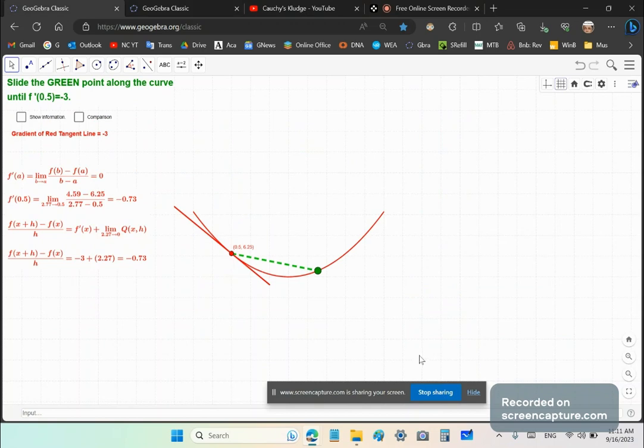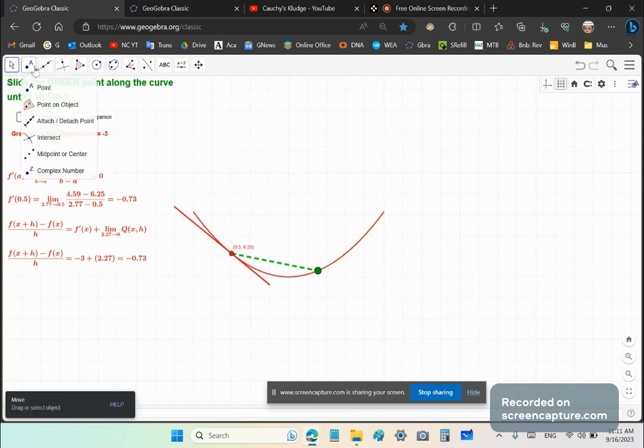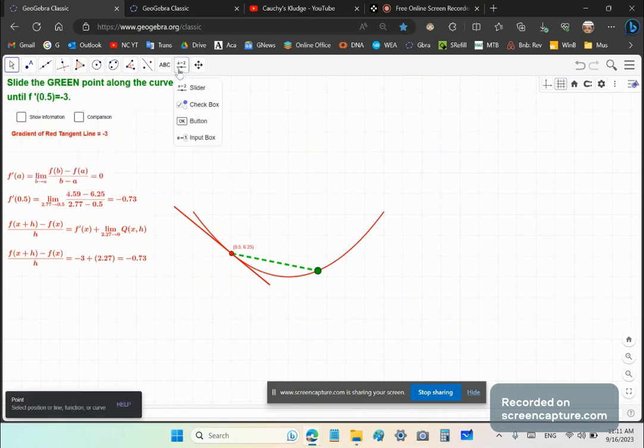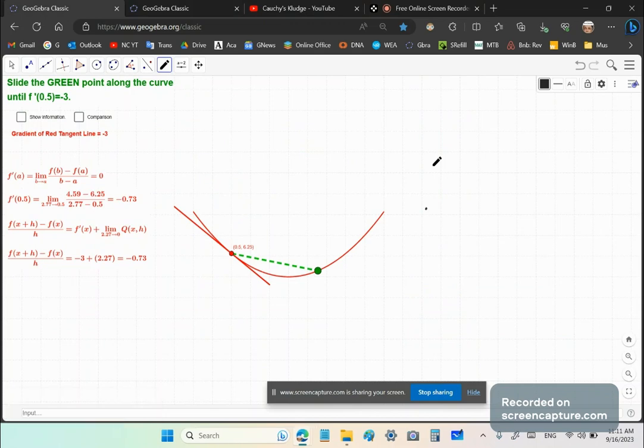But now what would happen if for example you had a function like this? Let's get a pen. Let's say you had a function that went like that, and then like that, and then just over here was the point, and then went all the way like that. So now over here it's not even smooth, and it might not even be defined here or here or here or here.